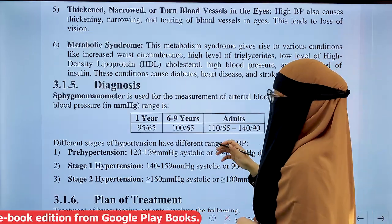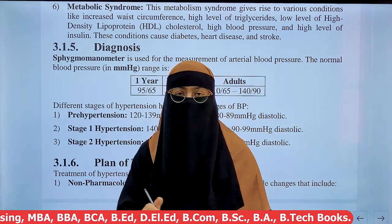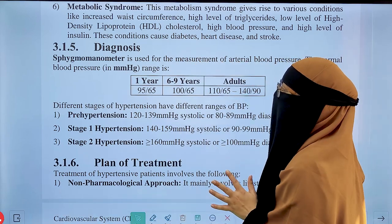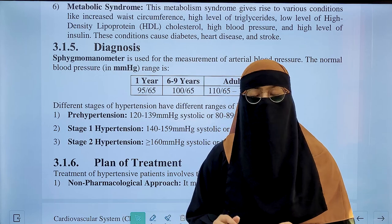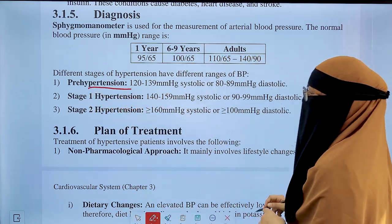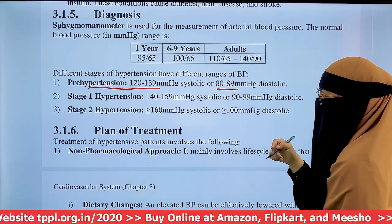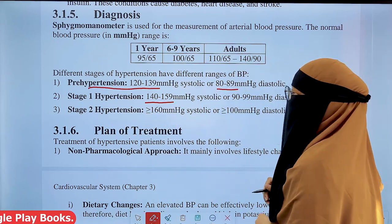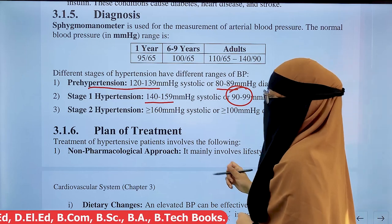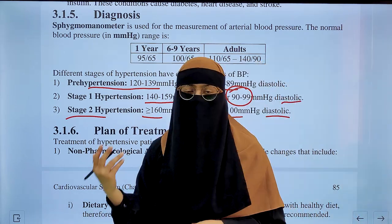Hypertension is diagnosed using a sphygmomanometer. Normal blood pressure is 120/80 mmHg. Elevated blood pressure is classified into three stages: pre-hypertension, with systolic 120–139 and diastolic 80–89; stage 1 hypertension, with systolic 140–159 and diastolic 90–99; and stage 2 hypertension (severe), with systolic 160 and above and diastolic 100 or above.